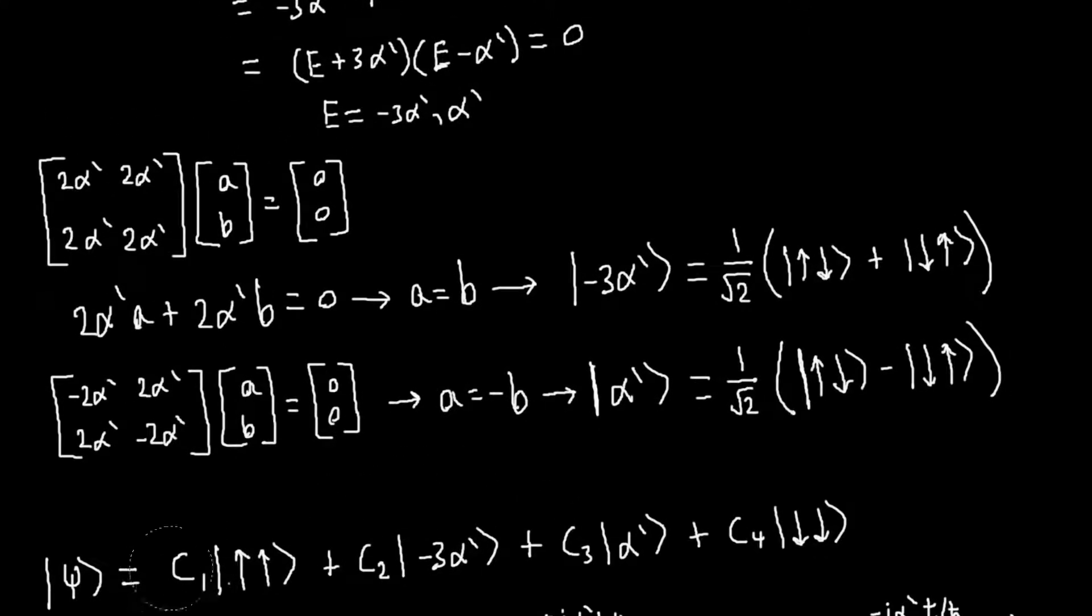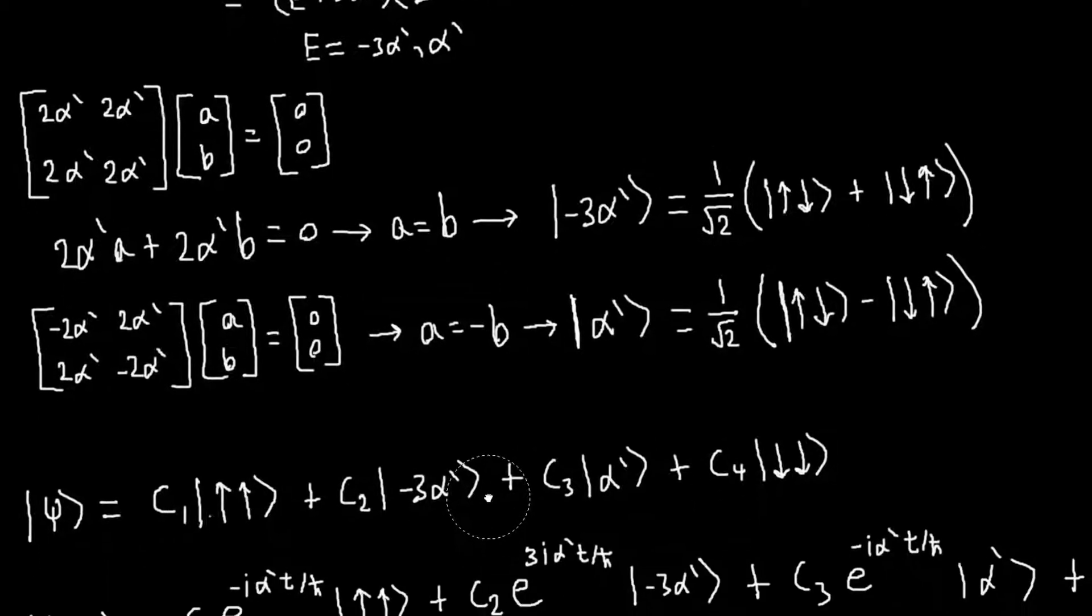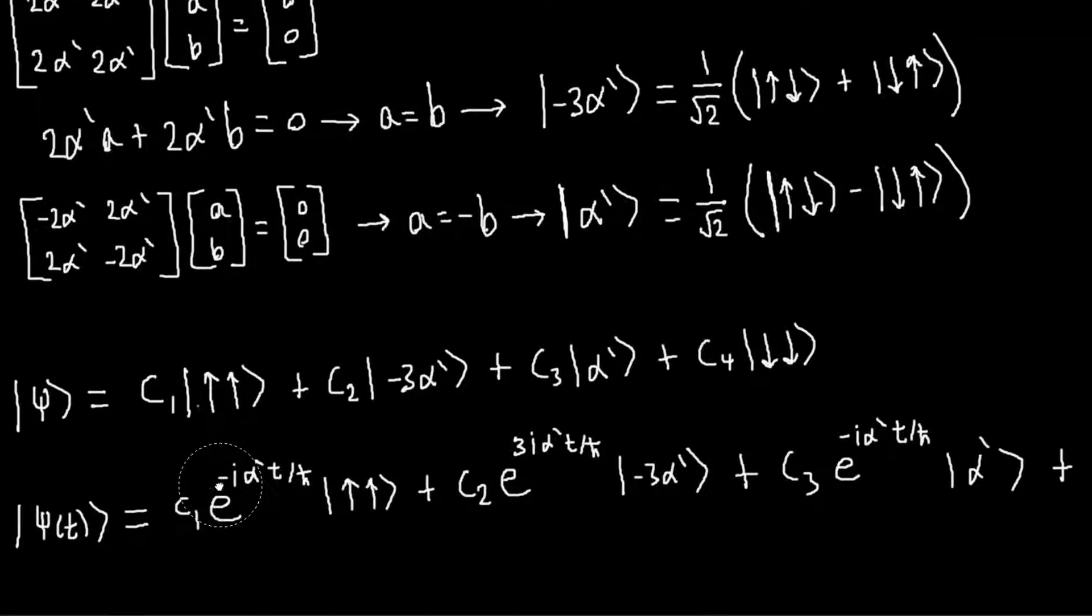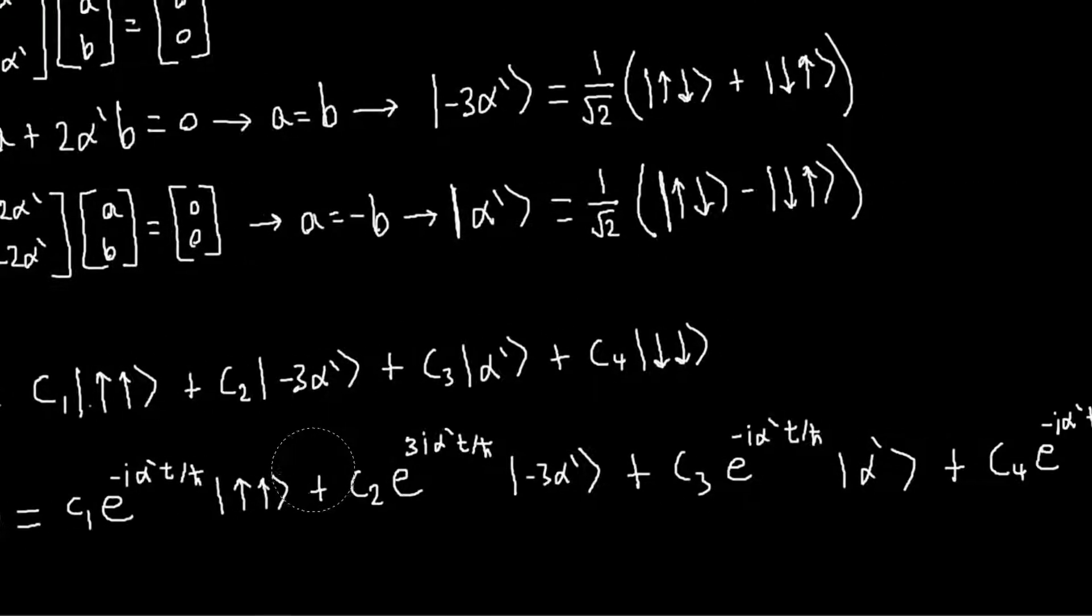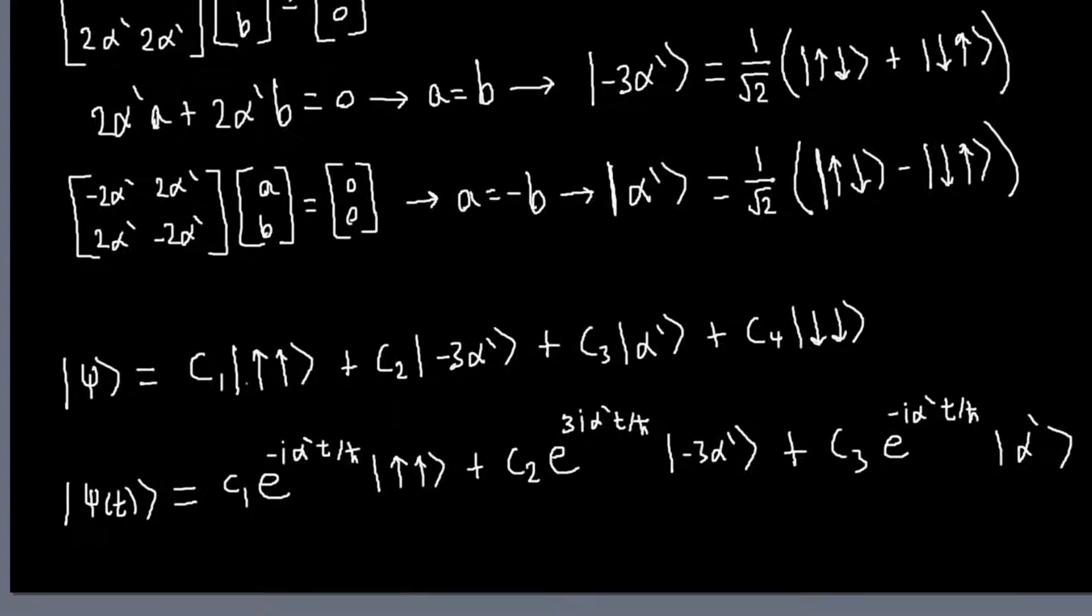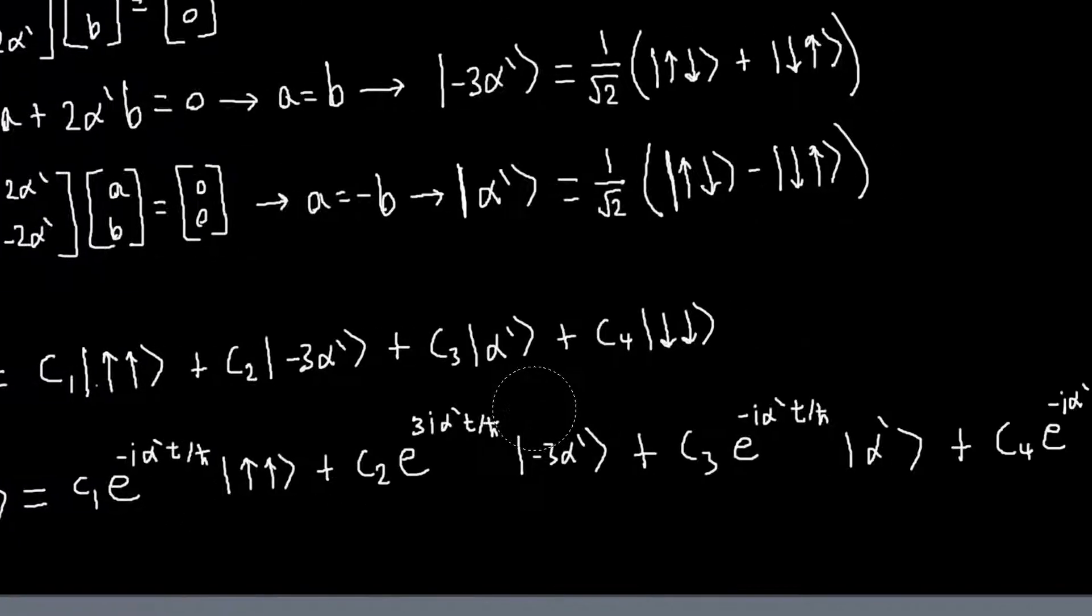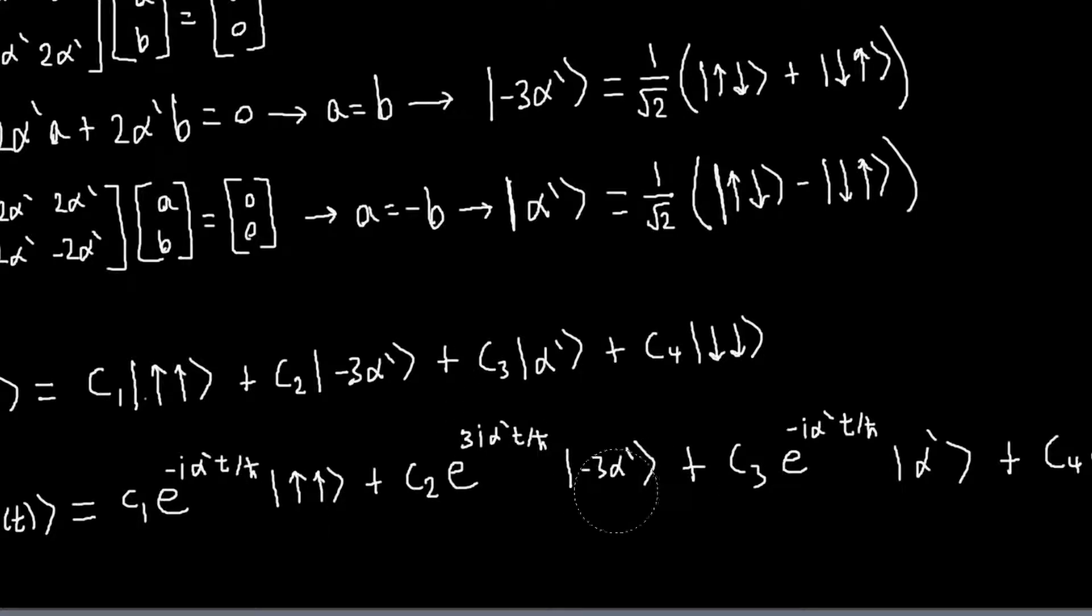We can write our state as a linear combination of these vectors. And then when we act our time evolution operator on it, we just do what we normally do, apply the exponential thing to each term, and then replace the Hamiltonian with the corresponding eigenvalue.